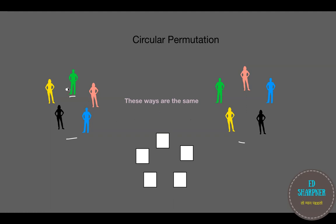Look at the green man — on his right hand side is a yellow woman and on his left is a pink woman. In both figures it is the same: everybody has just shifted one step to the left. They are arranged in the same order relative to each other, so these kinds of arrangements are considered the same in circular permutation.